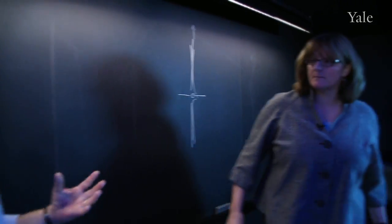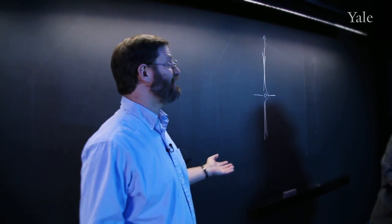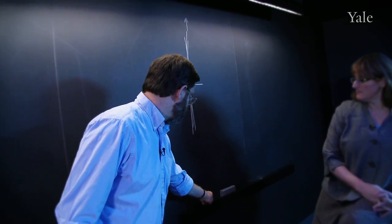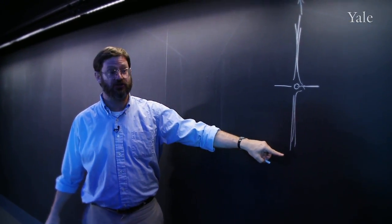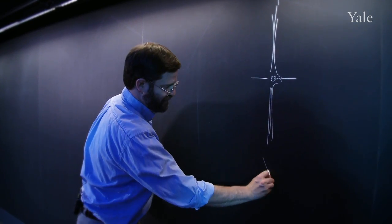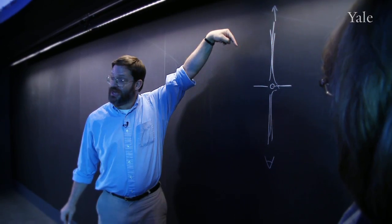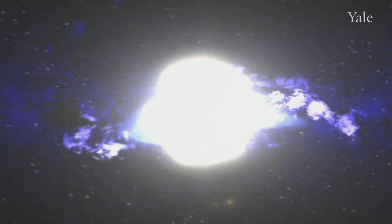And one of the things that we're observing most intensely here at Yale is a category of these black holes called blazars. Blazars happen when this jet of material comes straight at you. So we're down here, here's our eyeball or our observatory, and the jet moving at a large fraction of the speed of light is coming straight at us.